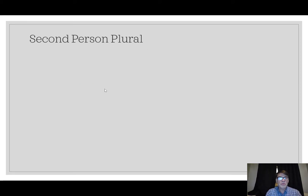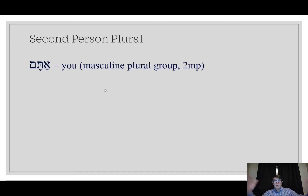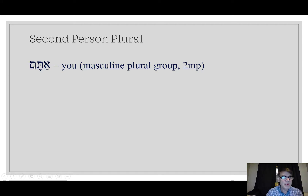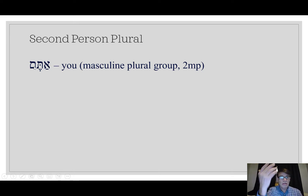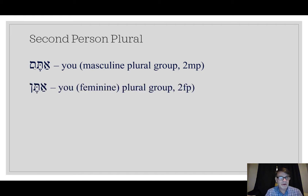Let's finish out this video with the second person plural. Atah is you, singular man. At is you, singular woman. Atem is you — y'all, hey guys — referring to a group of men. Remember the mem for men. We're seeing a pattern: at is like atah; put a mem on the end — atem — and we've got y'all, masculine plural. You can guess what the next one is. If em is for men, for y'all women it's a nun. So aten is you, plural, to a feminine group.